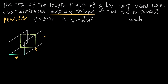We still have two variables in our volume equation, so we need more information. The problem tells us that the total of the length plus the girth can't exceed 120 inches. Girth is just the distance around the box. The girth plus the length can't be more than 120 inches, and we want to use all 120 inches since we're trying to maximize volume and make the box as big as possible. So we set length plus girth equal to 120.